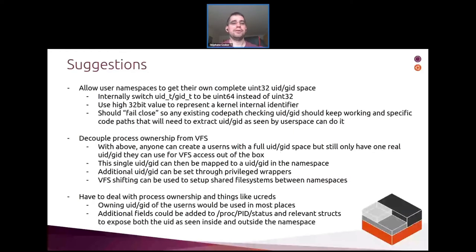Added fields to things like /proc/[pid]/status would expose the inner UID or GID, so tooling that does want to show it can pull who owns the namespace, what the UID and GID is inside it, and show those as separate columns in ps. That also applies to ucreds — which includes UID and GID — where we might add an additional field. The UID and GID would effectively be the namespace owner by default to avoid breaking backward compatibility, with extra fields to also expose what the UID and GID is inside the container.